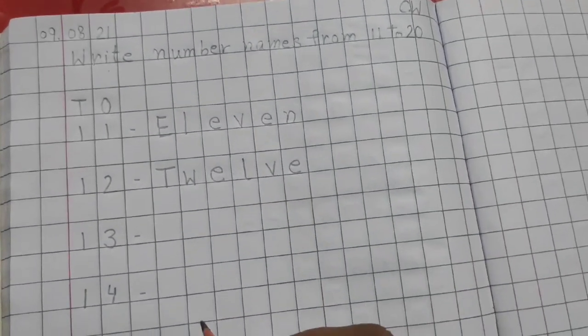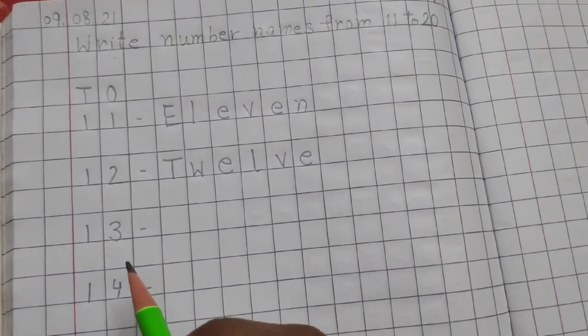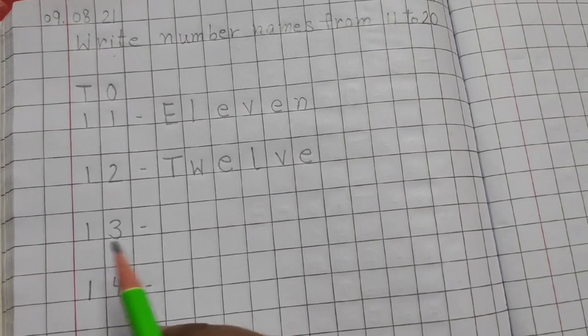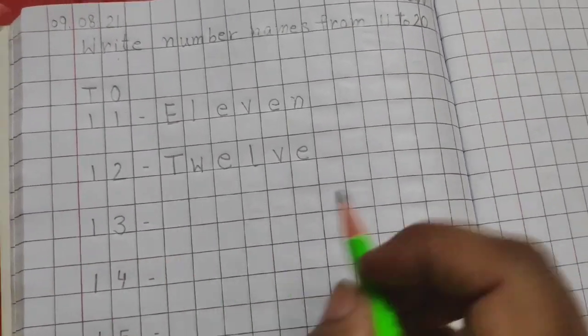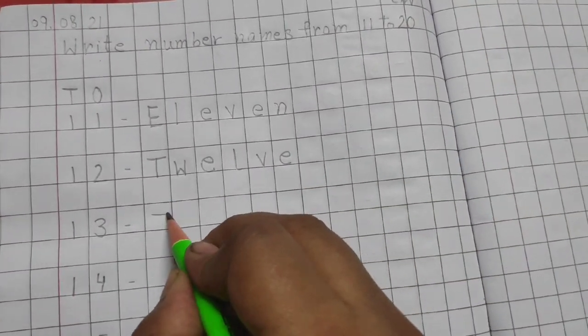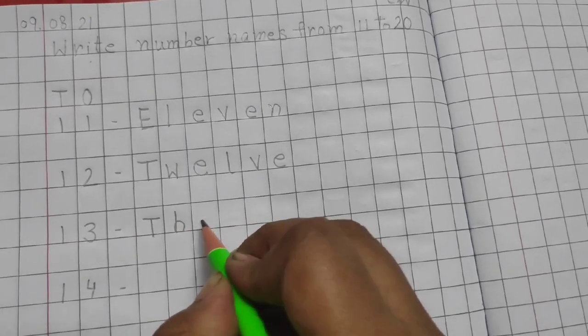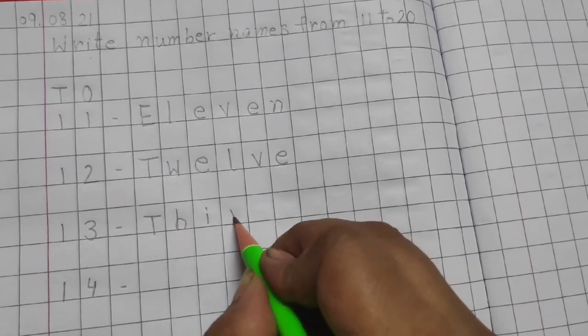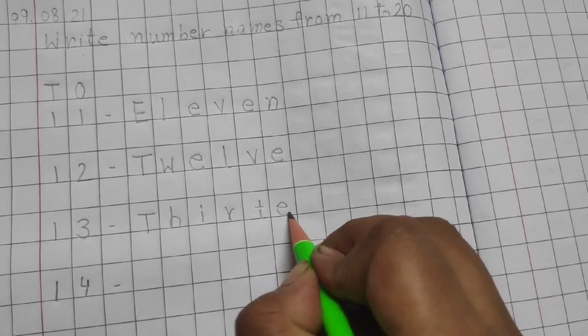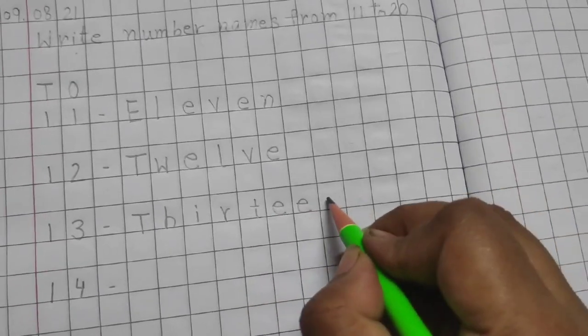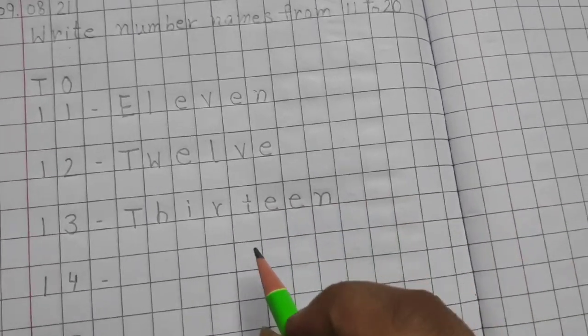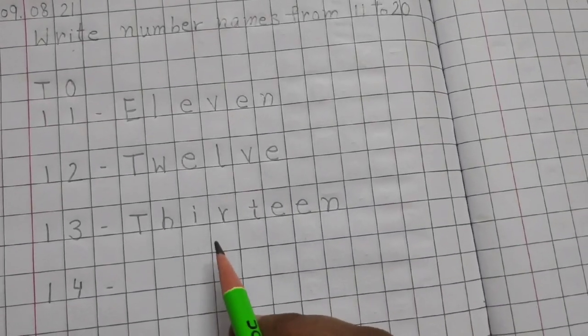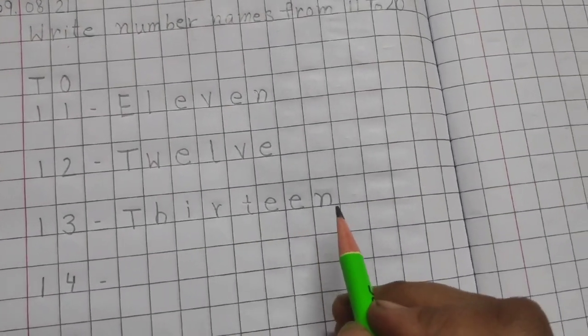So children, you have to write as well as speak. Then the next number is 13. The number name for 13 is T-H-I-R-T-E-E-N. You can also read it T-H-I-R-T-E-E-N.